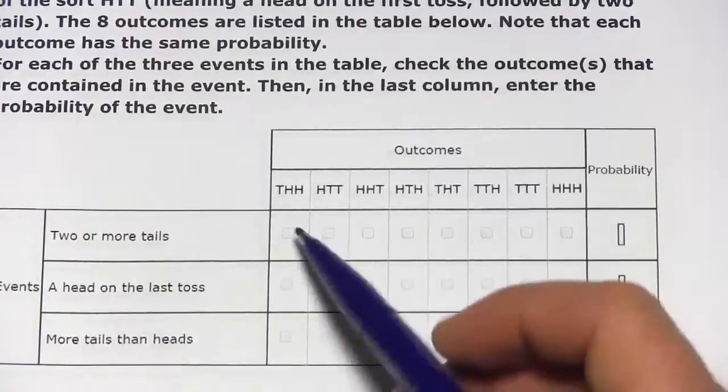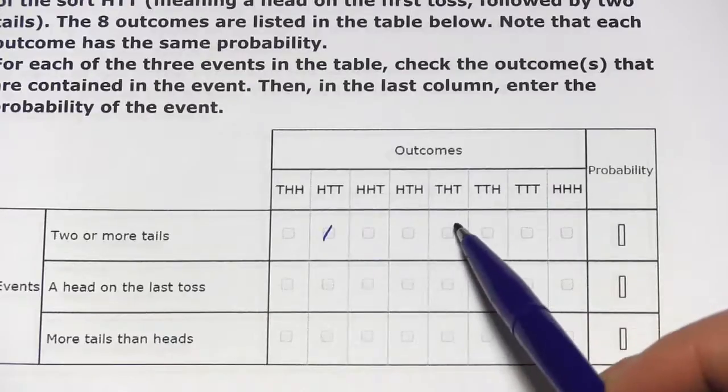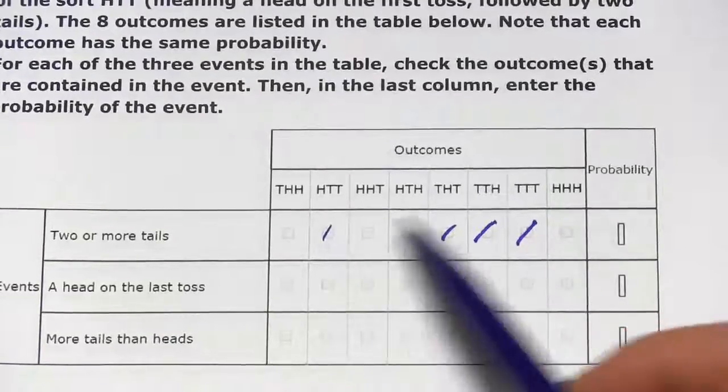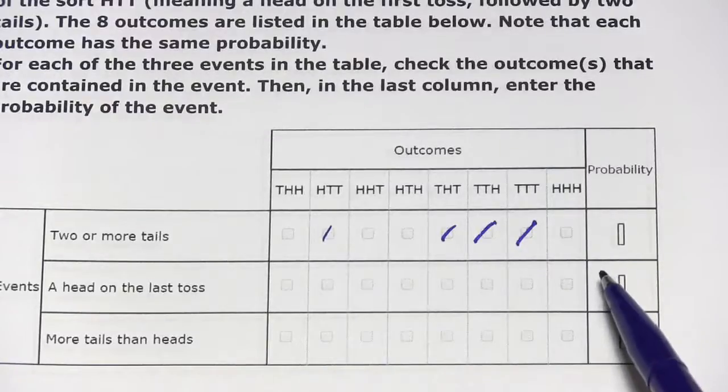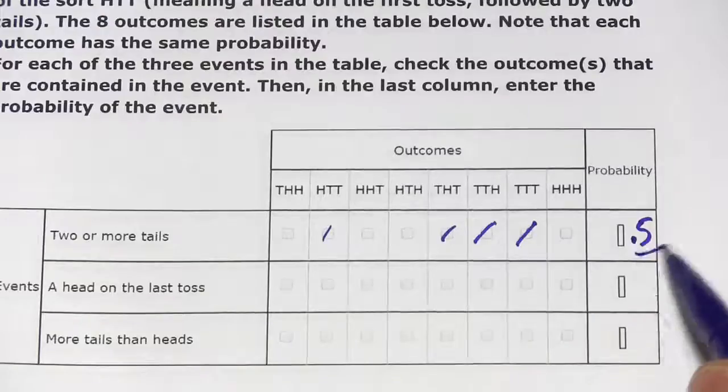So let's look for two or more tails. [Checking each outcome: no, yes, no, no, yes, yes, yes, no.] So four out of the eight have two or more tails, so the probability of two or more tails is 0.5.